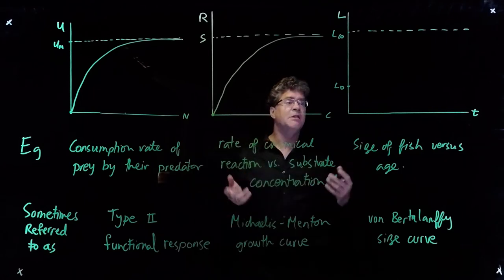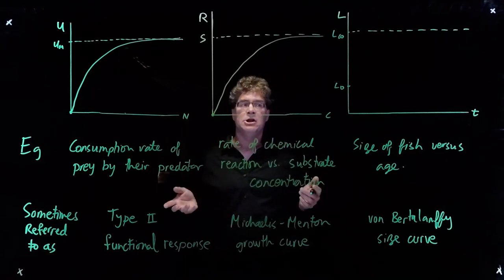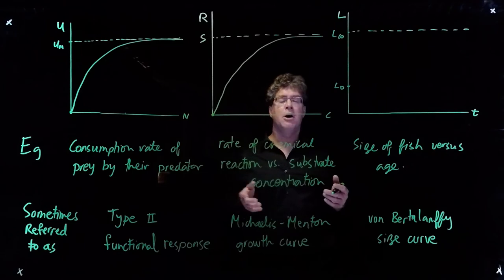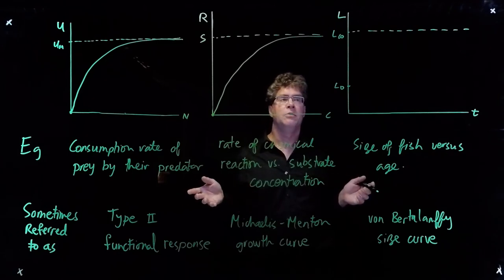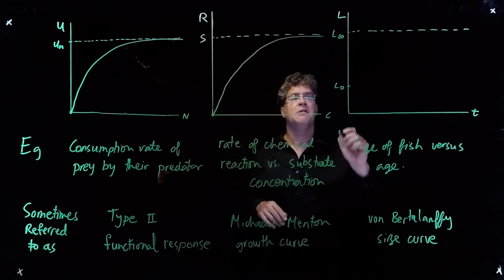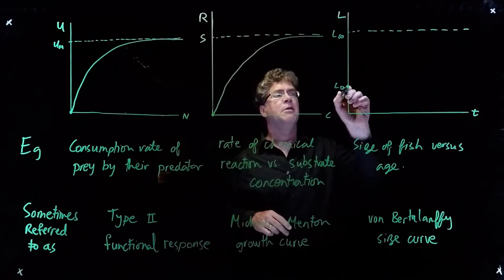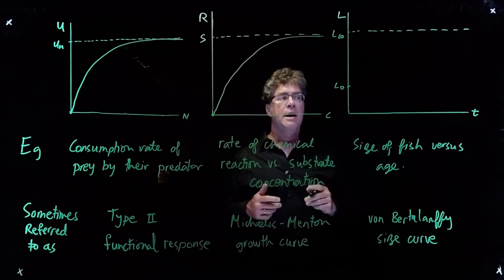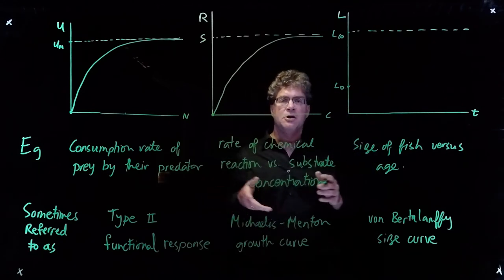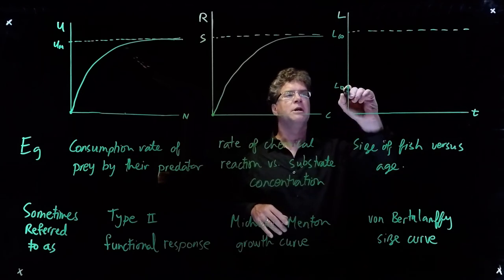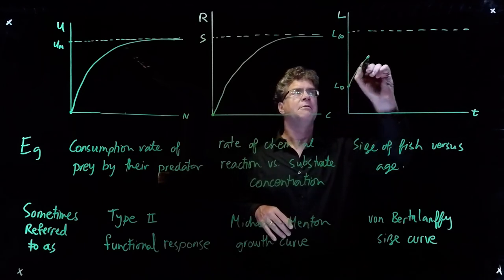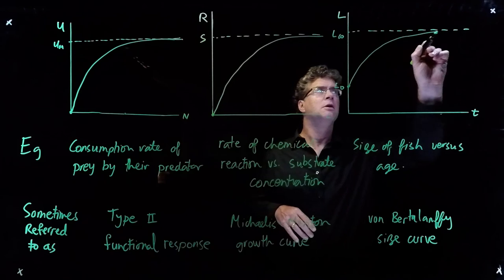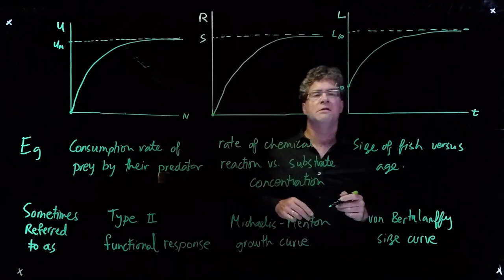If we're interested in the size of a fish versus age, we might use what's called the von Bertalanffy growth curve. Here, a fish starts at size L0, and as time progresses, the fish gets larger, but eventually it levels off and gets no larger, and approaches L infinity.